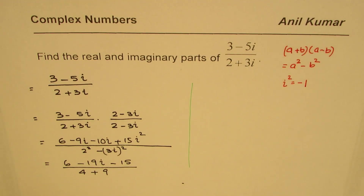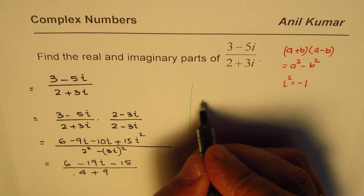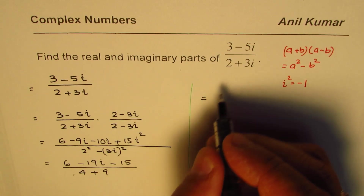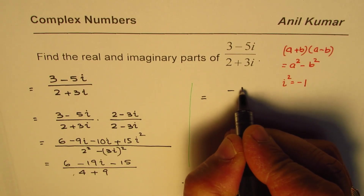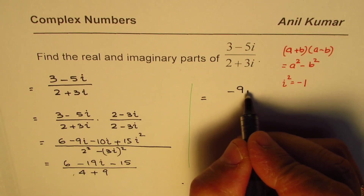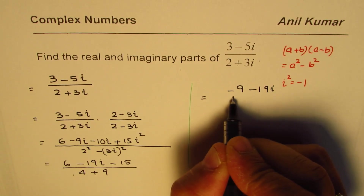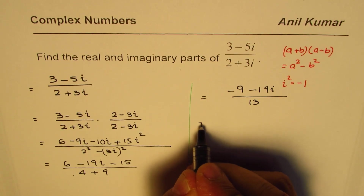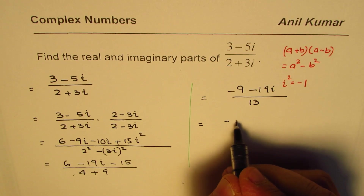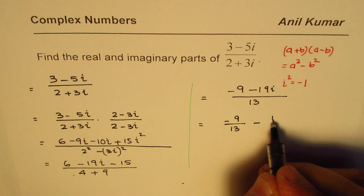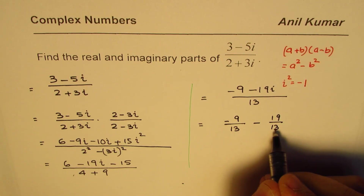Now combining the terms in the numerator: 6 minus 15 gives minus 9, and the imaginary terms give minus 19i. The denominator becomes 13. So we can write this as minus 9 over 13 minus 19 over 13 i.